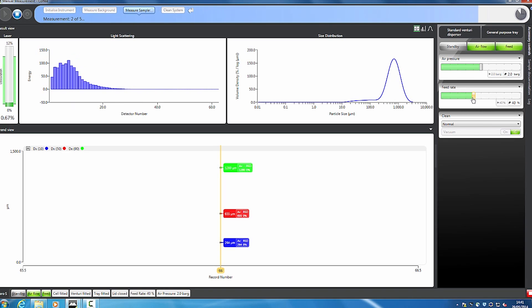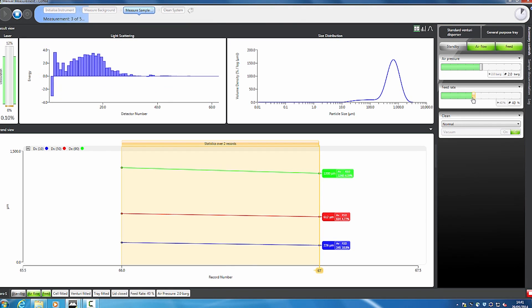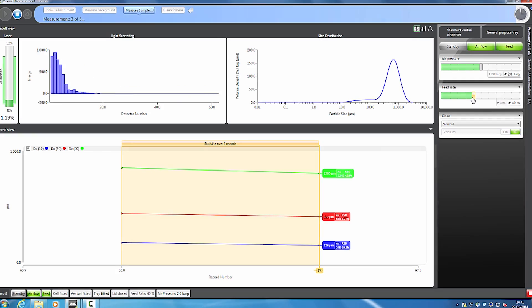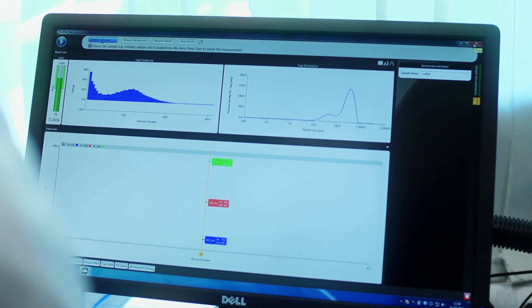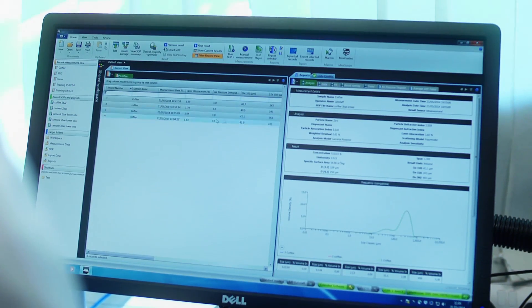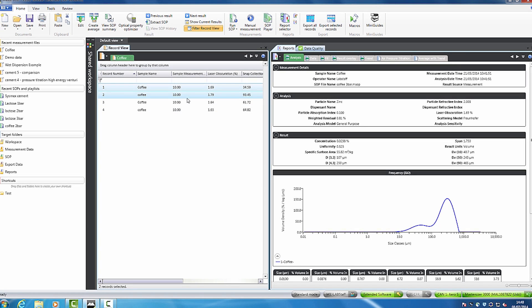Once the sample feed starts, the software automatically triggers the measurement. Live reporting of the results is then provided, so you can be sure that the measurement is operating optimally. The measurement runs until all of the sample is measured, ensuring representative results are obtained. Once the measurement is complete, the results can be displayed within the software's record view.